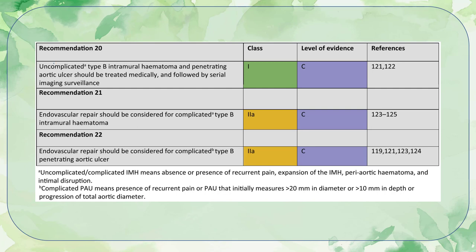Recommendations: uncomplicated type B intramural hematoma and penetrating aortic ulcer should be treated medically and followed by serial imaging surveillance. Endovascular repair should be considered for complicated type B IMH and for complicated type B PAU. Complicated IMH is defined by recurrent pain, expansion of the IMH, peri-aortic hematoma, intimal disruption, or progression into aortic dissection. Complicated PAU is defined by recurrent pain, initial size more than 20 mm diameter or more than 10 mm depth, or progression of total aortic diameter on serial surveillance scans.